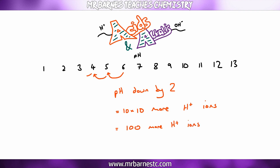This process continues — for example, going from pH 6 to pH 2 is a decrease of 4, so you have 4 lots of 10: 10 × 10 × 10 × 10, which comes out to 10,000 times more concentrated, or 10,000 times more H+ ions.